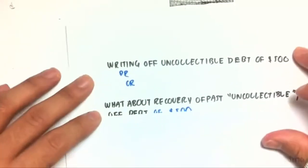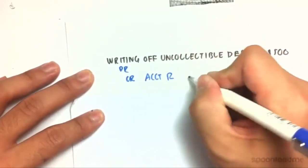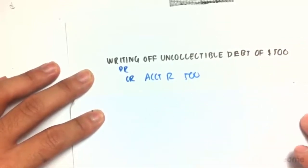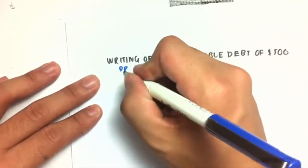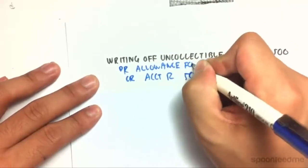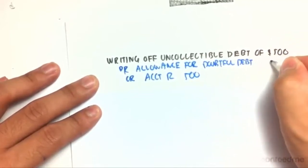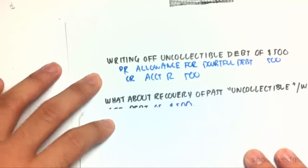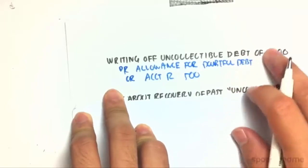When we write off uncollectible debt of $500, we debit allowance for doubtful debt $500 and credit accounts receivable $500, because now we know we can't collect that $500 back, so we reduce accounts receivable by that amount and also reduce our allowance for doubtful debt by $500. As you can see, when we write something off it doesn't actually affect expenses — it will only affect the measurement of assets.